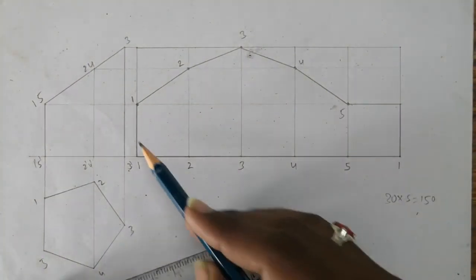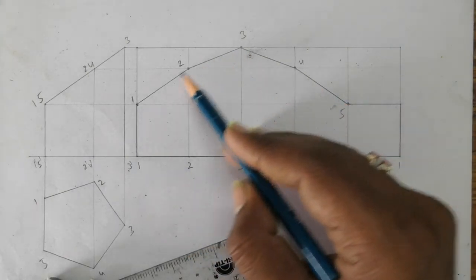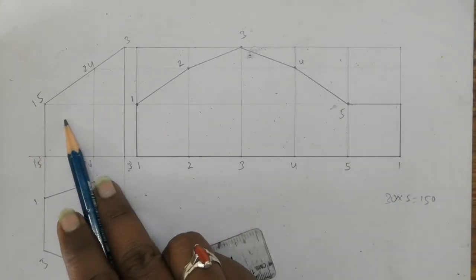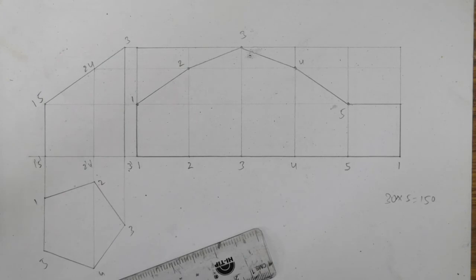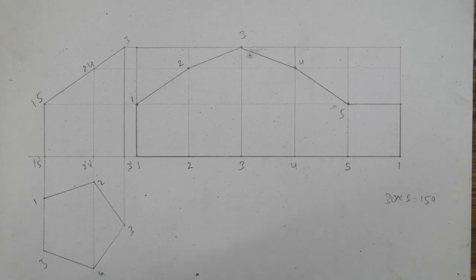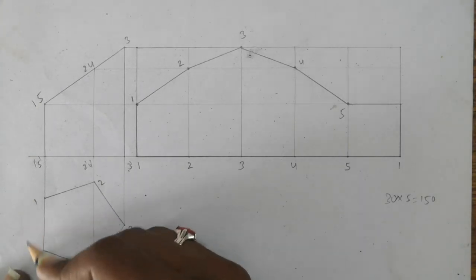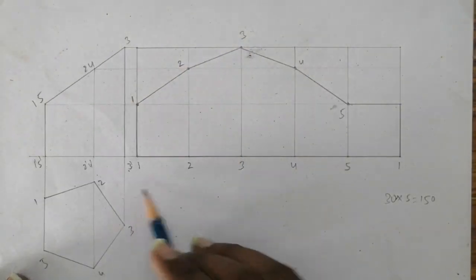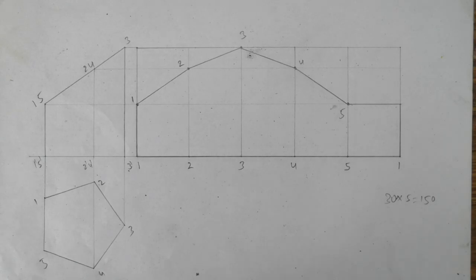So this portion is the part we required. If you fold it, it will be forming into this truncated pentagonal prism. That is how we draw the development of a truncated object. In later videos, we will be seeing how to draw the truncated cylinder and truncated cone also, and truncated pyramids. You can mark the dimensions here: this is 30, this is 30, and this side 60. This length is 150. Thank you.